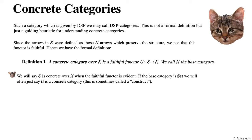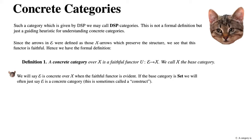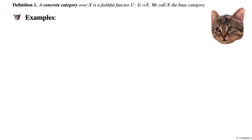If the base category is Set, we will often just say that E is a concrete category. This is sometimes called a construct when it is a concrete category over Set. So let's give some examples.